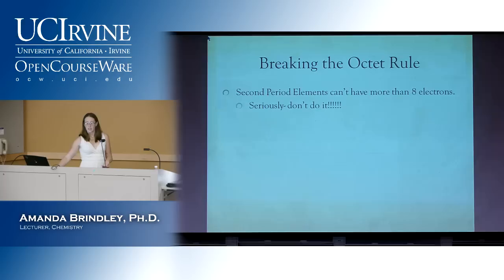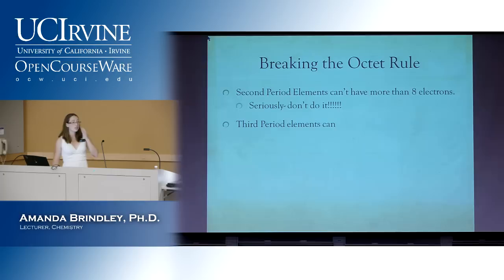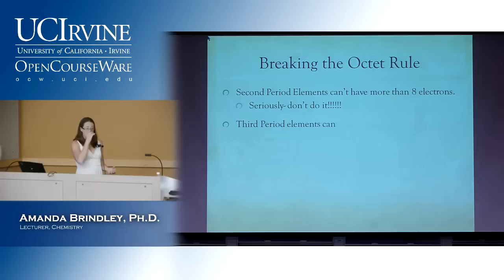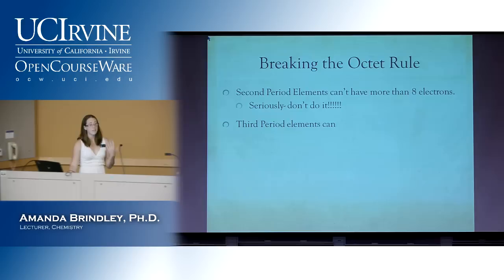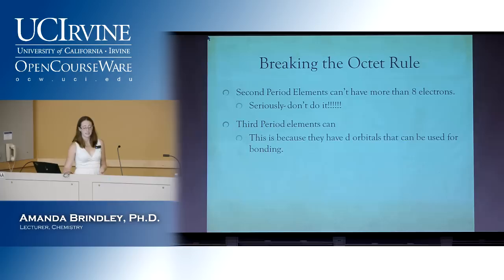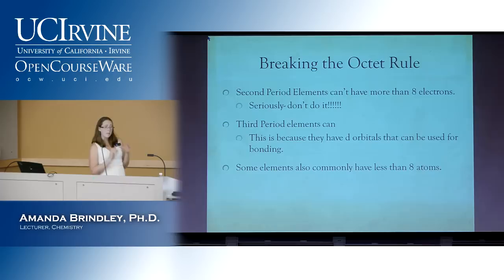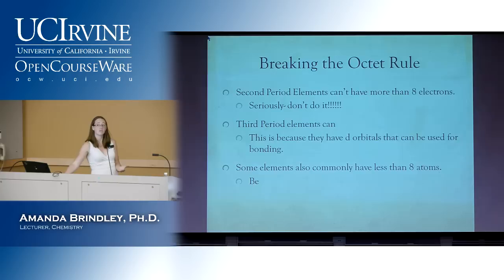Your third period elements — when you get down there, you have all these d orbitals you're allowed to use, and you can form bonds with more than eight electrons total, so you're allowed to give them ten or twelve electrons if need be. Some commonly used ones that have less than eight: beryllium will just form two bonds, leaving it with four electrons; aluminum will do three, leaving just six valence electrons; and boron does the same thing and will often just have three.